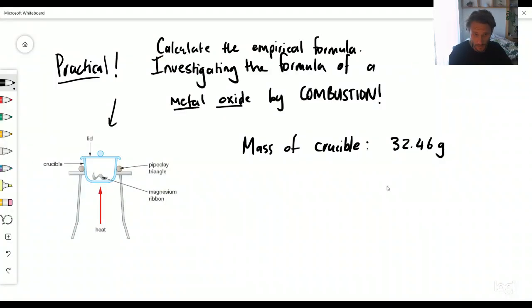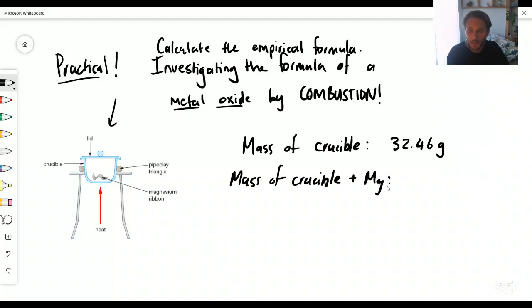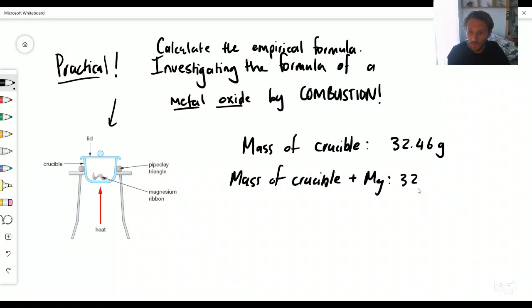Then I put my magnesium inside. So the mass of the crucible plus the magnesium - it's obviously going to weigh more, right? How much more will it weigh? Well, we can weigh 32.70 grams. We haven't done anything, we haven't lit the Bunsen burner. We are just measuring what is the mass of magnesium, and you can quickly do a calculation by subtracting these two numbers: 32.70 minus 32.46.